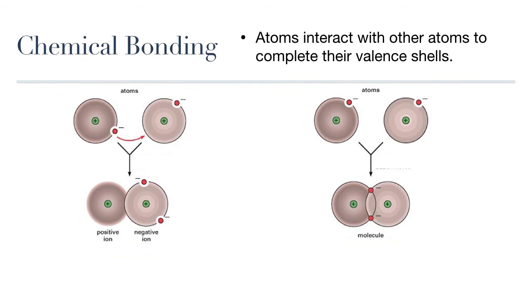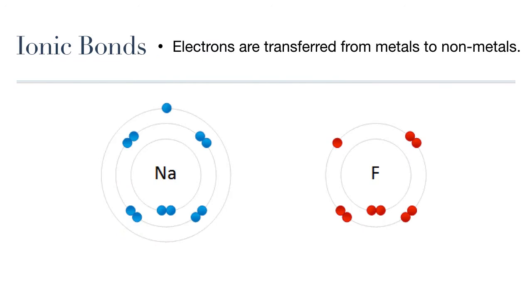When atoms interact with each other to fill their valence shells, they will form chemical bonds. There are two main types of chemical bonds: ionic bonds, that are formed when electrons are transferred from one atom to another, and covalent bonds, that are formed when electrons are shared between atoms. Let's review ionic bonding first.